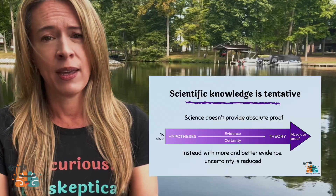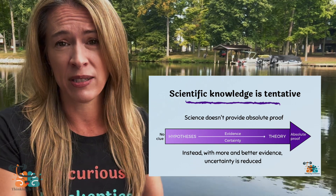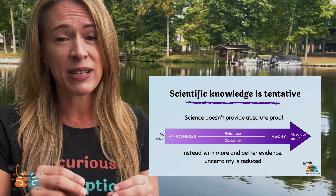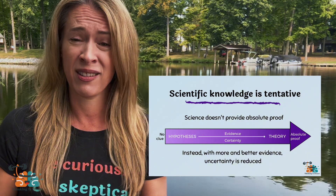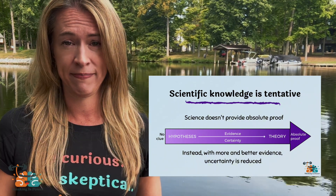The rule of tentative conclusions. A popular misconception about science is that it proves things true. But scientific conclusions are always tentative and open to change with new evidence. Each study is a piece of a larger picture that becomes more clear as we put the pieces together. Because there is always more to learn and more pieces of the puzzle yet to be discovered, science doesn't provide absolute certainty — instead, uncertainty is reduced as evidence accumulates. There's always a chance we're wrong, so we have to leave ourselves open to changing our minds.